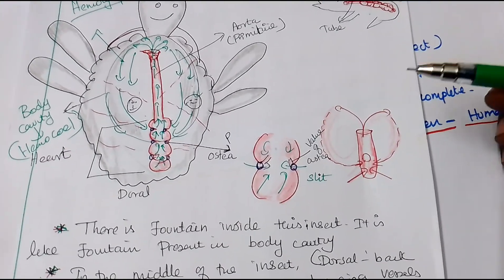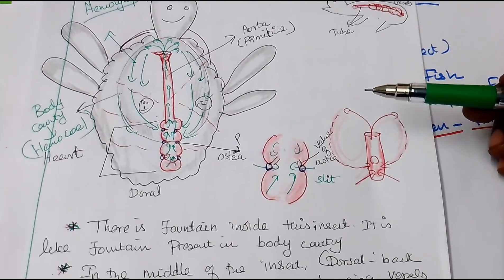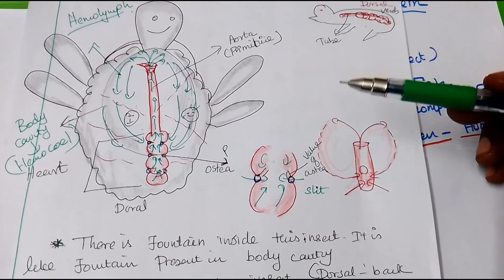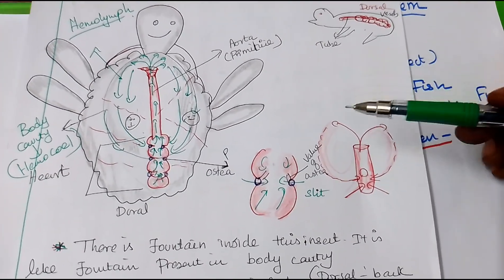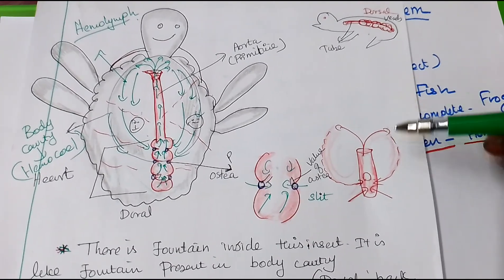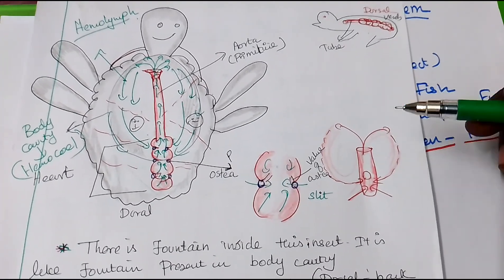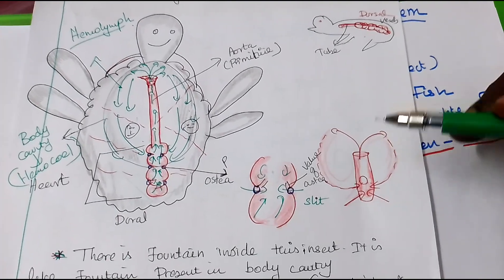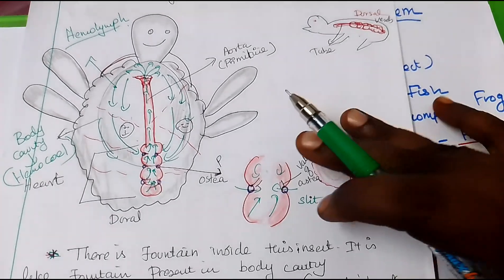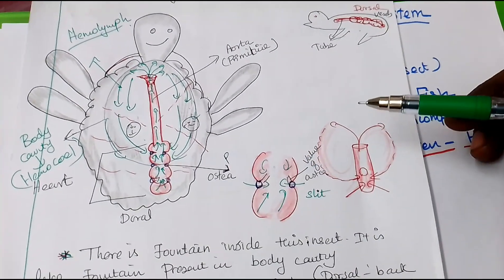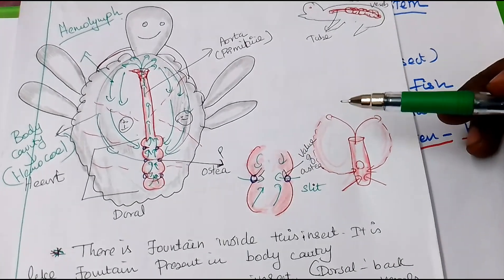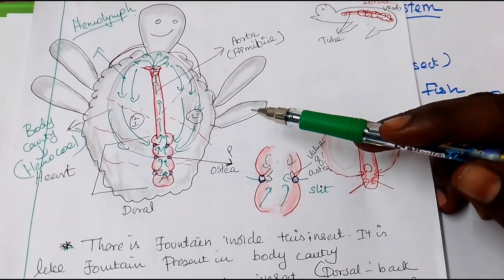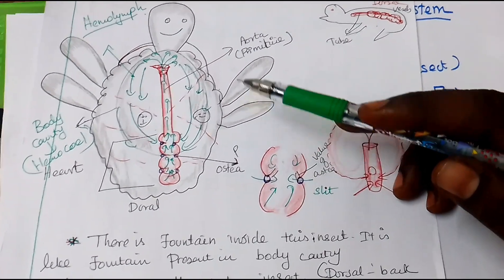Many diploma students have not taken up the biology group, so we will have a brief overview of insects, frogs, and fish so that you can better understand the human circulatory system. This is a hypothetical picture of an insect.